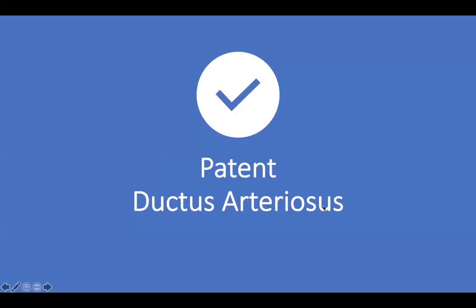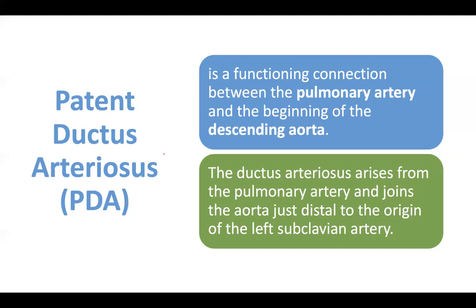The next congenital heart disease we're going to talk about is the PDA, or patent ductus arteriosus. Always remember in patent ductus arteriosus, there is a functioning connection between two important blood vessels: the pulmonary artery and the descending aorta.